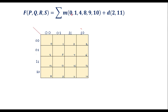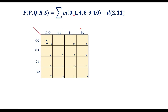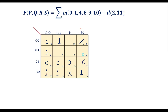So the cell numbers with minterms are: 0, 1, 4, 8, 9, and 10 — each gets a 1 in the KMAP. The don't care values are 2 and 11, so at cell number 2 and cell 11 we place a cross mark. In the remaining cells, we enter 0.